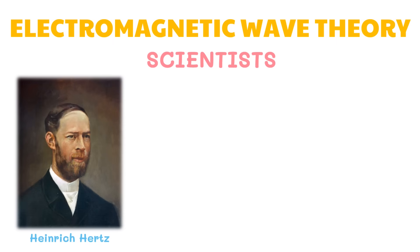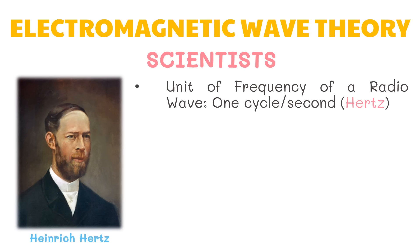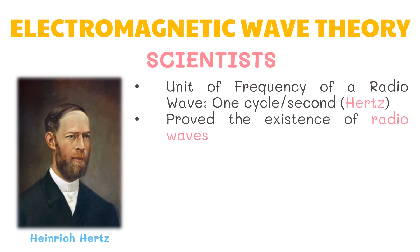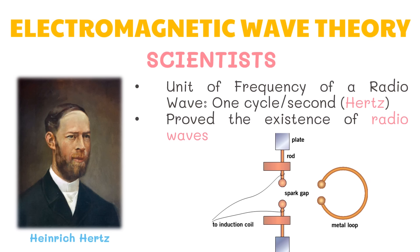Heinrich Hertz, a German physicist, applied Maxwell's theories to the production and reception of radio waves. The unit of frequency of a radio wave — one cycle per second — is named Hertz to honor his contribution. He proved the existence of radio waves in the late 1880s, using two rods that served as a receiver and a spark gap as the receiving antennae. Where the waves were picked up, a corresponding spark would jump. Hertz showed that these signals possessed all the properties of electromagnetic waves.